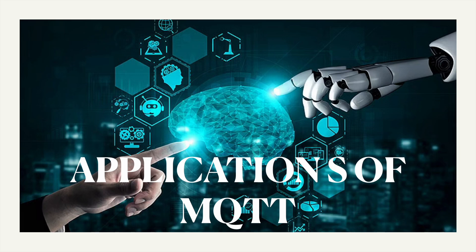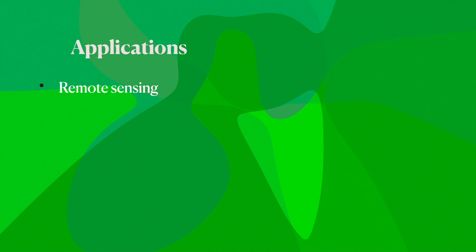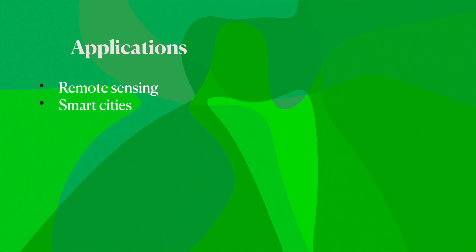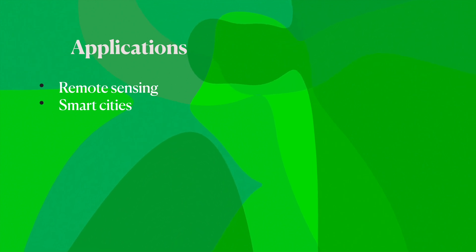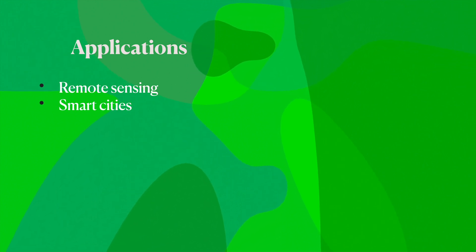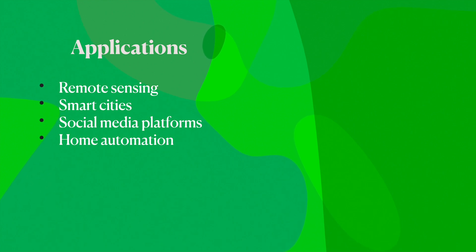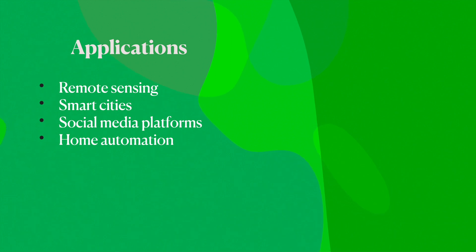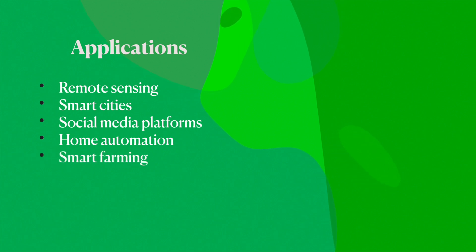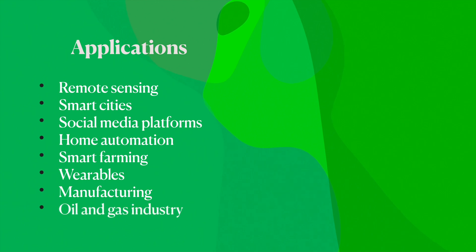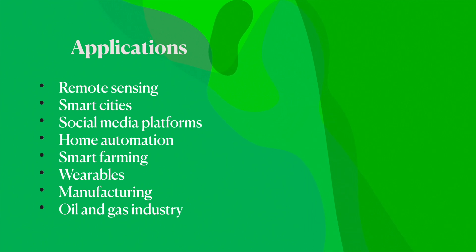The applications of MQTT include remote sensing, making cities smart by adding IoT devices all around and getting information via publish and subscribe, social media platforms, home automation — turning lights on or off, moving curtains as per your control — smart farming, wearables, manufacturing, and the oil and gas industry. These are the applications of your MQTT protocol.